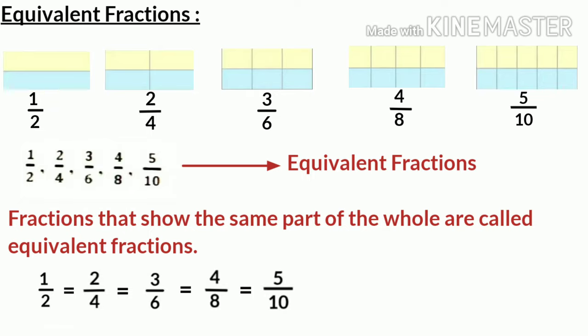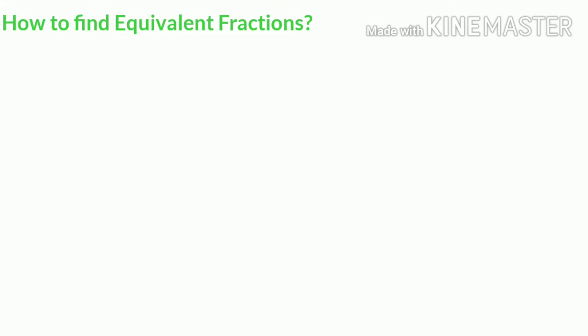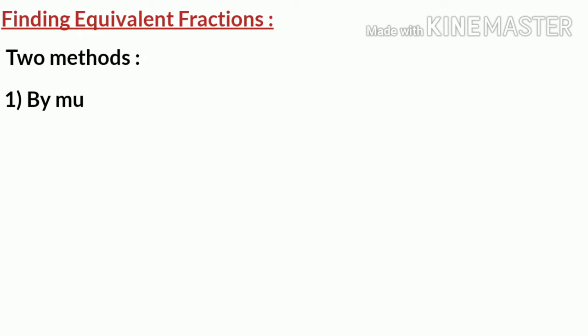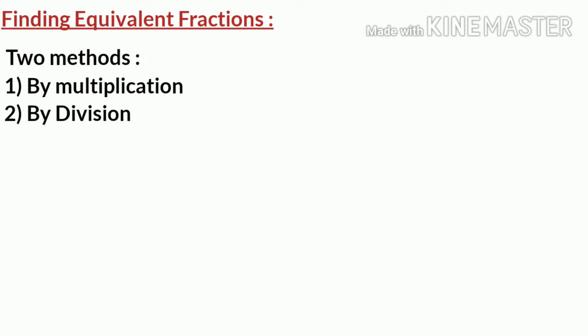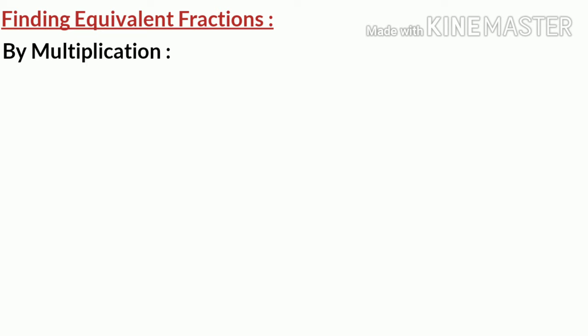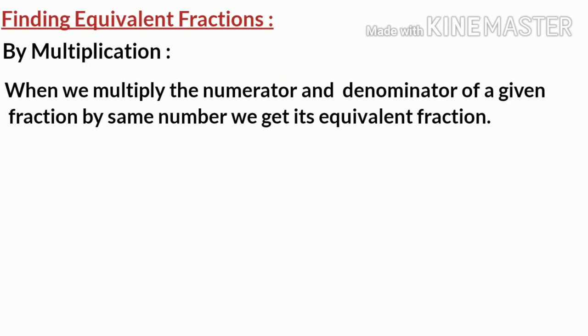Now let us see how to find equivalent fractions. There are two methods: one, by multiplication; and two, by division. Let us first discuss the first method, that is by multiplication. When we multiply the numerator and denominator of a given fraction by the same number, we get its equivalent fraction.